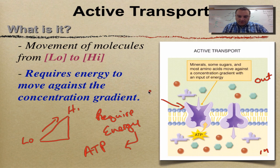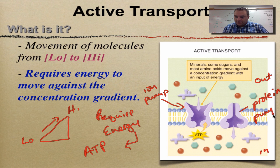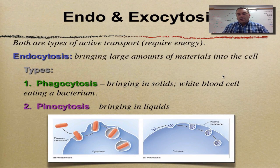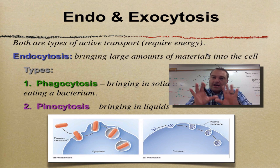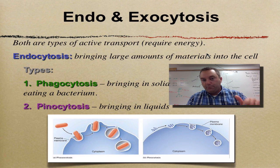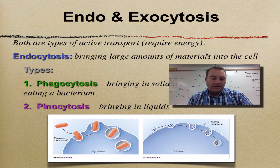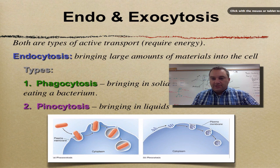We can call this an ion pump, or sometimes we just refer to these as a protein pump because they're made out of proteins — and they pump stuff in, requiring energy. Now sometimes we need to bring in a whole bunch of stuff and push out a whole bunch of stuff out of the cell. That's going to be done through what is called bulk transport. Bulk transport is done through two processes called endocytosis or exocytosis.